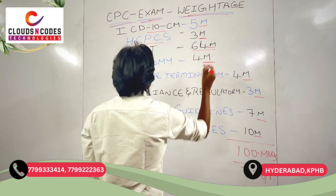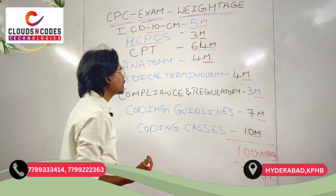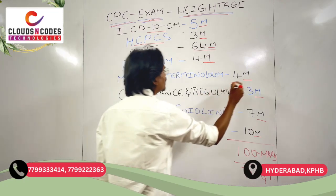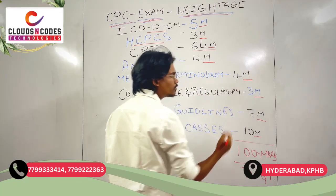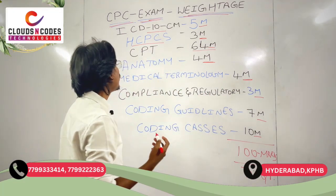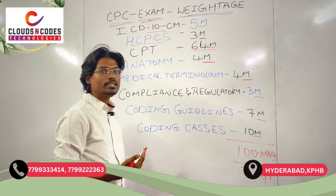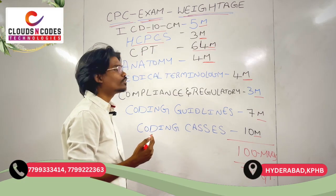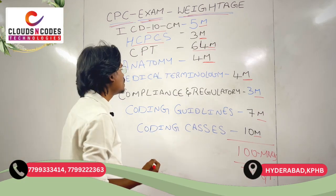From Anatomy, you will get 4 marks. From Medical Terminology — medical terms like Cardio, Hepato, Reno, and all these medical terms — you will get 4 marks.